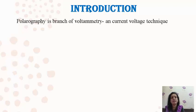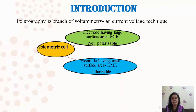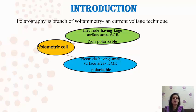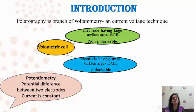Polarography is a branch of voltammetry where we study current-voltage relationships. The voltammetric cell used in this technique consists of two electrodes where a predetermined potential is applied to find out current change during the study. One electrode has a large surface area, which is a non-polarizable electrode, whereas the other is a micro electrode with a very small area — that is the dropping mercury electrode, which is polarizable.